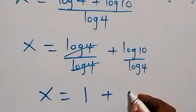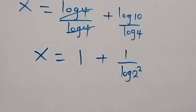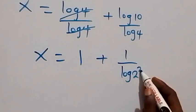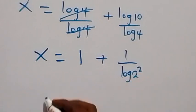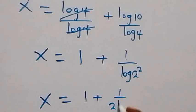Now log 10 is 1. We can write log 4 as log 2 raised to power 2. When we apply the power law, this 2 can come down, so we have x equals to 1 plus 1 over 2 log 2.